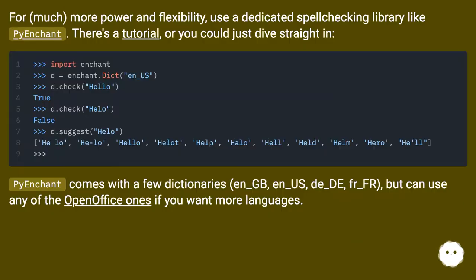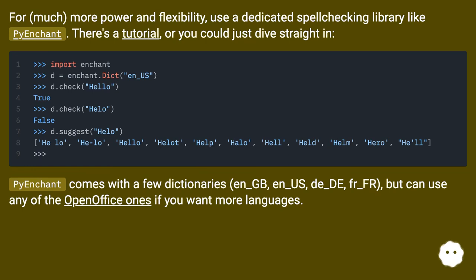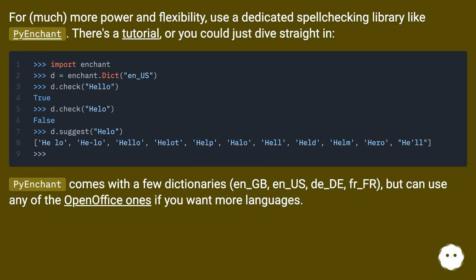For much more power and flexibility, use a dedicated spell-checking library like PyEnchant. There's a tutorial where you could just dive straight in. PyEnchant comes with a few dictionaries — en_GB, en_US, de_DE, fr_FR — but can use any of the OpenOffice ones if you want more languages.